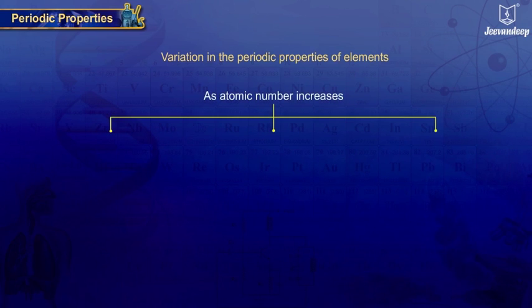Let us have a look at the tree diagram summarizing the variation in periodic properties of elements. As the atomic number increases,